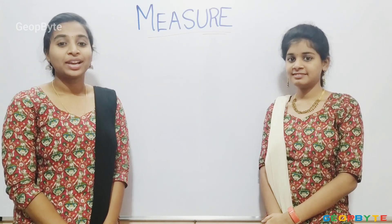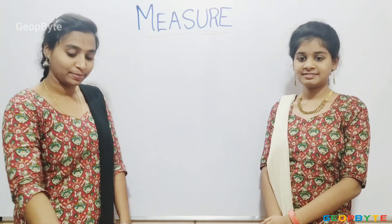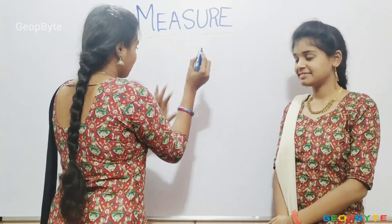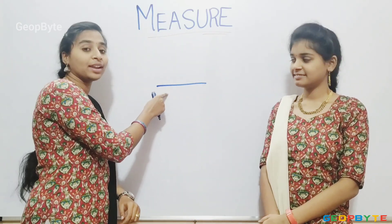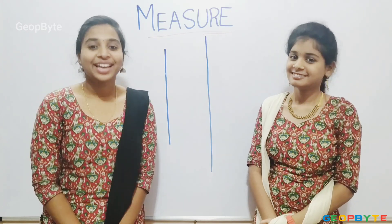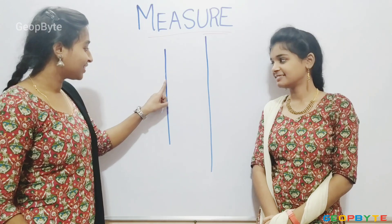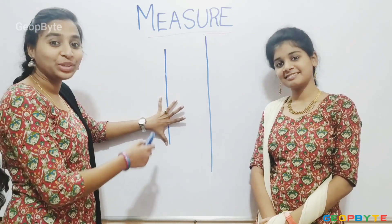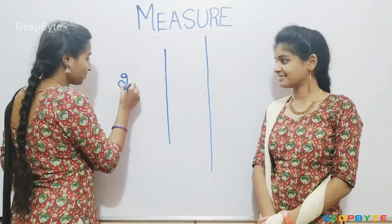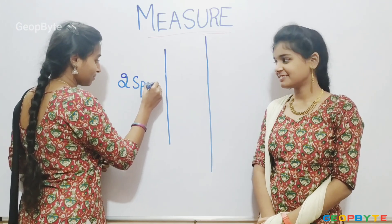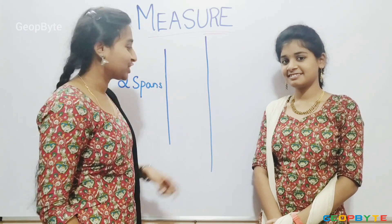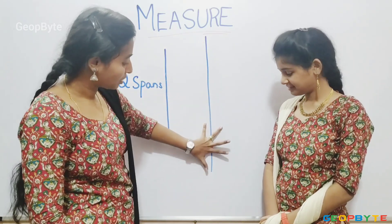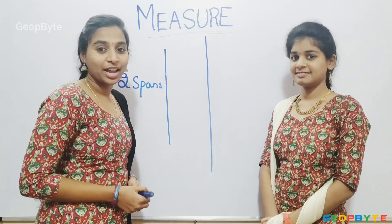Hey kids, now let us draw a line the length of my span. This is the line length of my span. Hey kids, now let us measure this line. One, two. This line is two spans of my hand. Now, let us measure this line. One, two, three. This line is three spans of my hand.